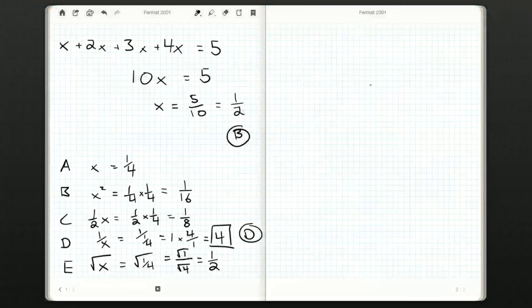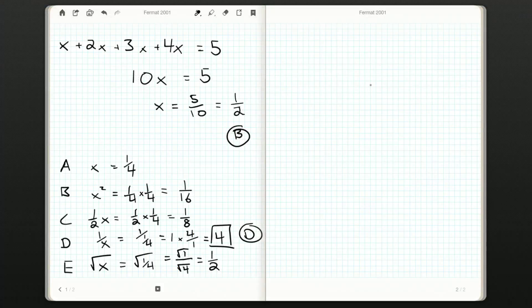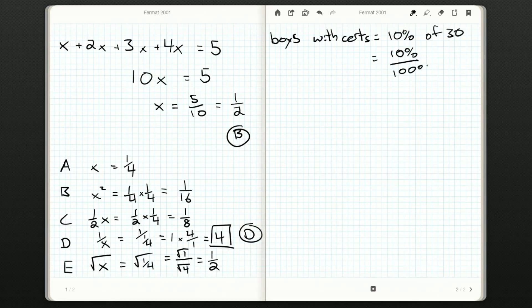So boys with certificates. Well, that's going to be 10% of 30. How can we do a percentage of a number? We convert that percentage into a fraction. All percentages are out of 100%. And then we treat the percent sort of like units. So the percents actually just cancel out. And we're left with 10 out of 100, which since both of them end in a 0, we can cancel that 0 out as well. It's 1/10 times 30. And 1/10 times 30, 1 over 10 times 30 is 30 over 10, which is just 3. So 3 boys earn certificates.